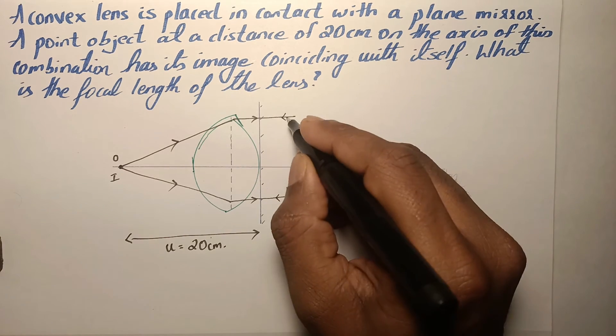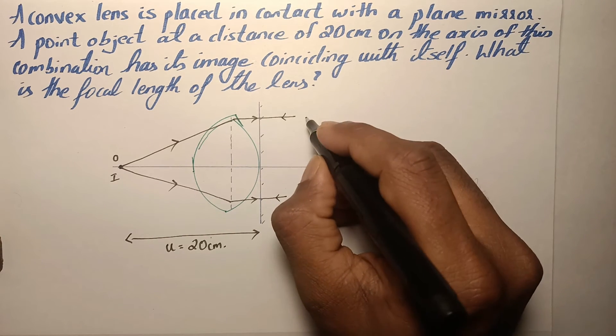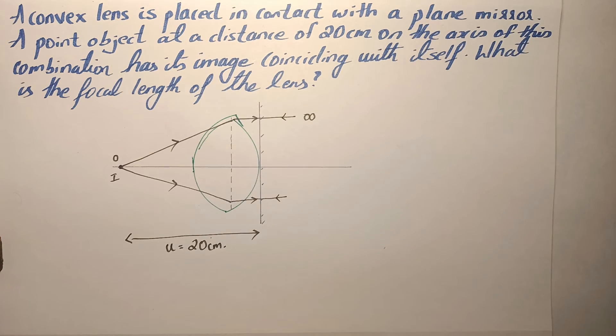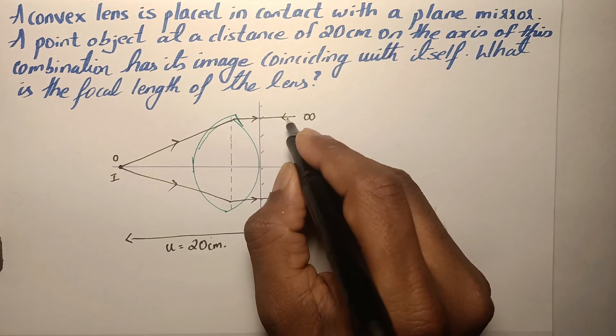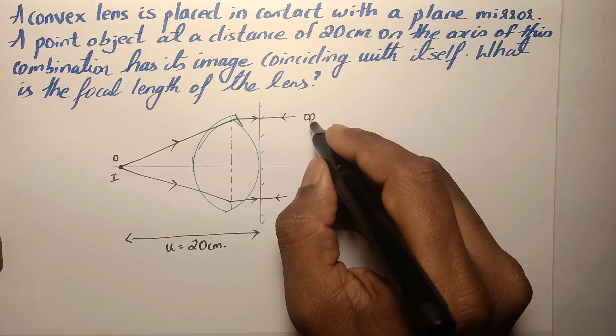As per theory, the parallel rays are considered as rays coming from infinity or going to infinity. So these reflected rays behave as if they are coming from infinity.